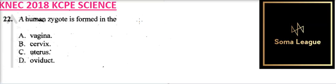Question number 22: Human zygote is formed in? The human zygote is formed when the male and the female cells combine to form the baby, or when the egg gets fertilized.